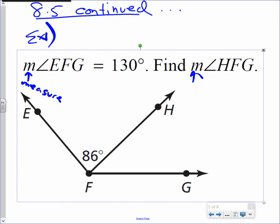So whenever you see the little m, that means measure, which means the degrees of an angle. So the degrees of angle EFG is 130°. They gave that to us.